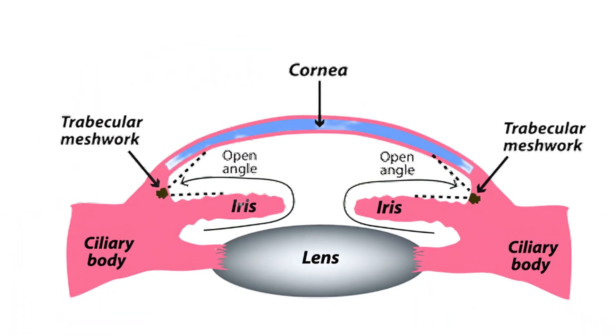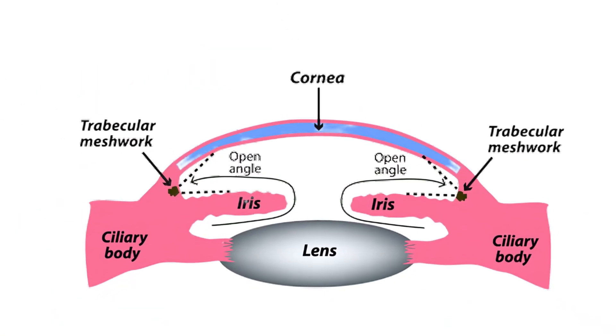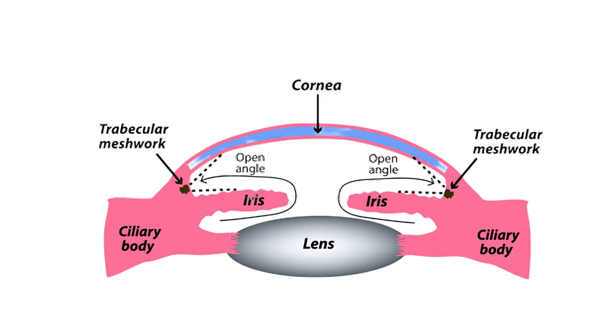As the name suggests, in open-angle glaucoma, the angle is not narrow. This is actually the most common form of glaucoma. We treat open-angle glaucoma by lowering the eye pressure. In open-angle glaucoma, there is a structure called the trabecular meshwork — this is part of the drainage system of the eye, and it is in this part of the drainage system where we see a lot of the resistance to outflow of the aqueous humor, which then causes high pressures in the eye.